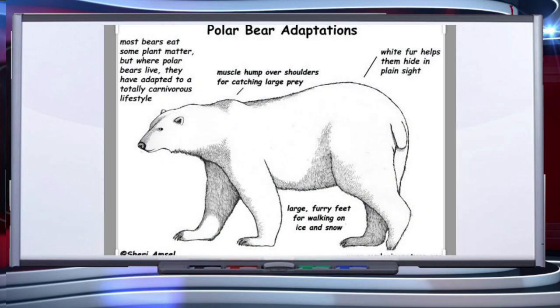Let's see some examples of adaptations in animals. Polar bears live in extremely cold conditions. That is why the color of the polar bear is white — white fur helps them to hide in plain sight. They have a thick layer of blubber which works as an insulating layer and protects them from the freezing cold. The feet of the polar bear are furry and large so that they can easily walk on ice and snow.